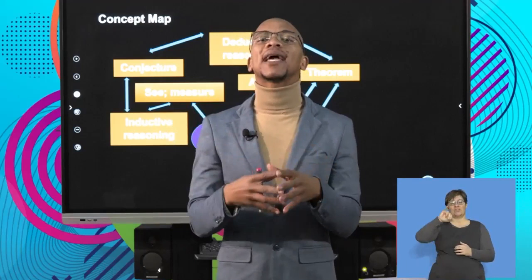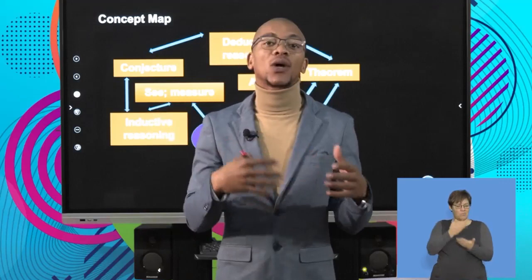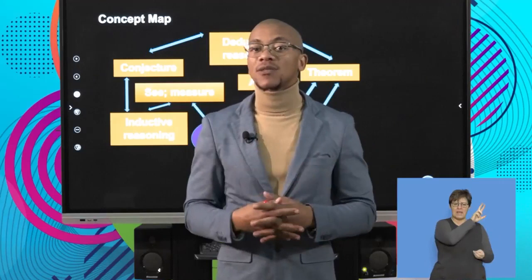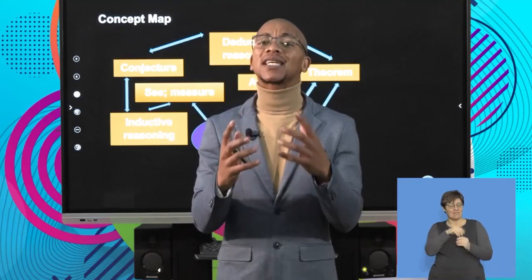From there, that leads to what we call a conjecture, which is a statement based on repeated observations. It then leads to a conclusion — for example, every time I add all the angles they must give me 180 degrees — which will then be considered a theorem or property of a triangle. That's what inductive reasoning is about, but let's see how we apply it.